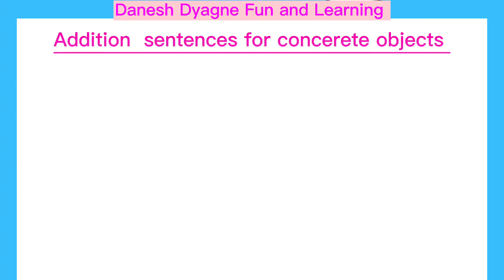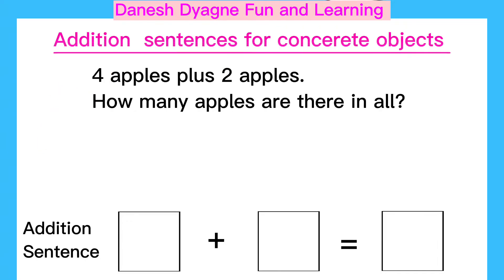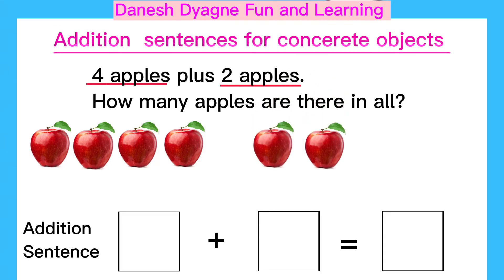Now let's take another example. Four apples plus two apples. How many apples are there in all? So let's have four apples here and another two apples here. We gonna write here four, and here is two.